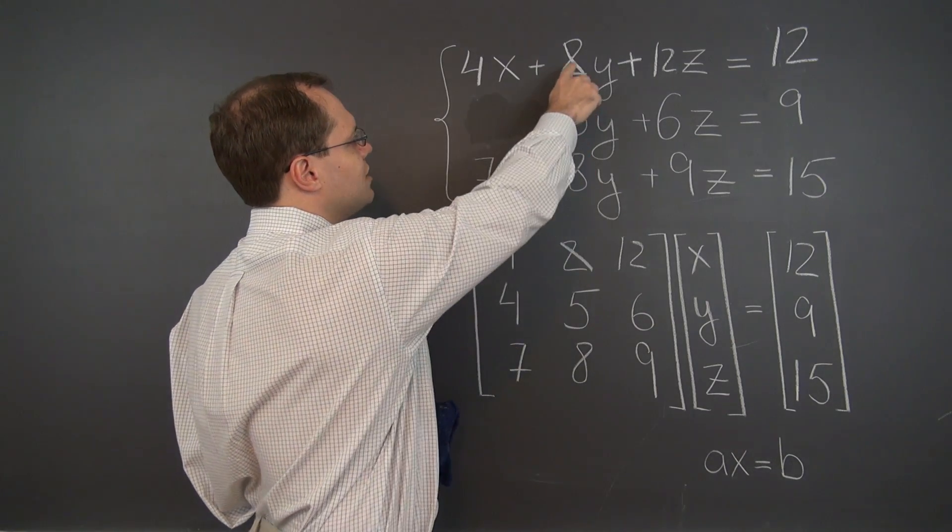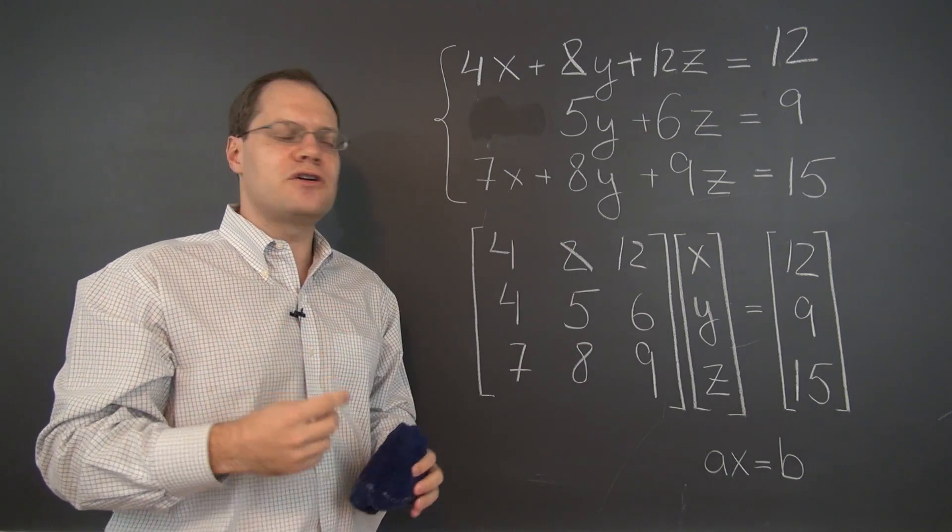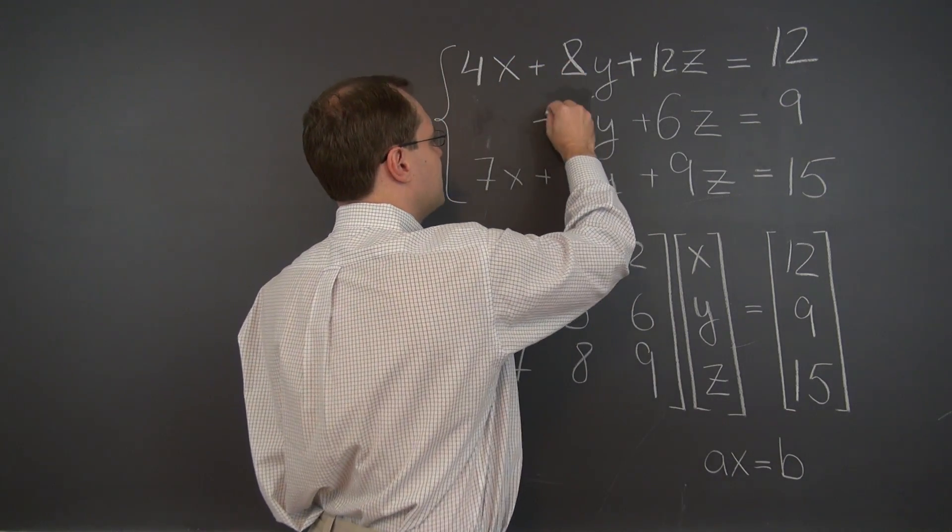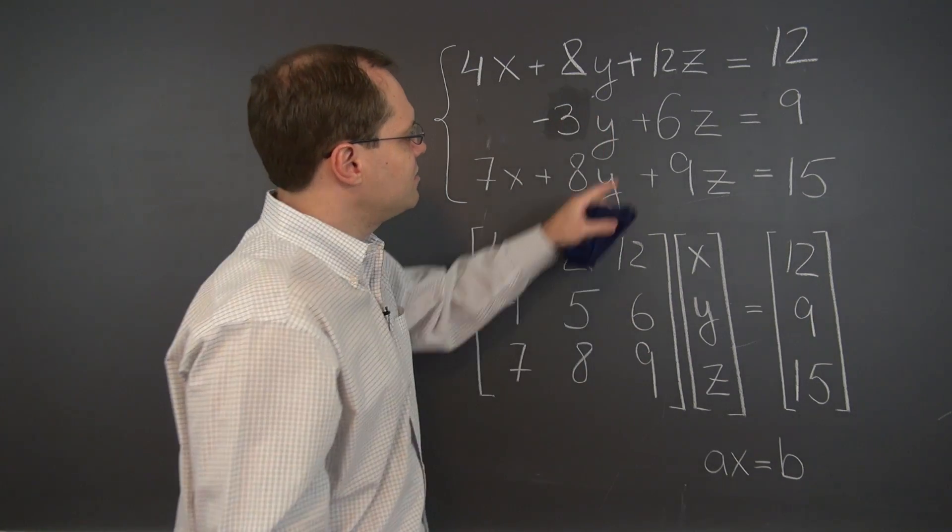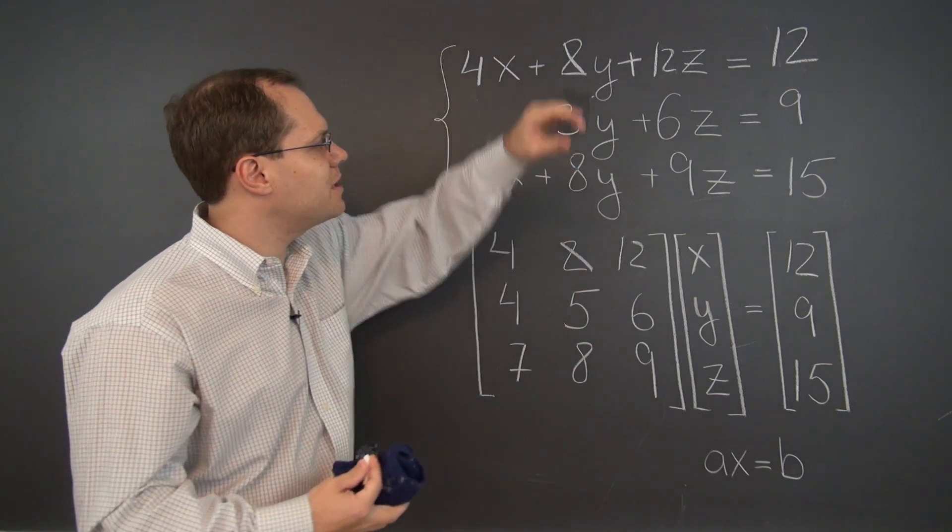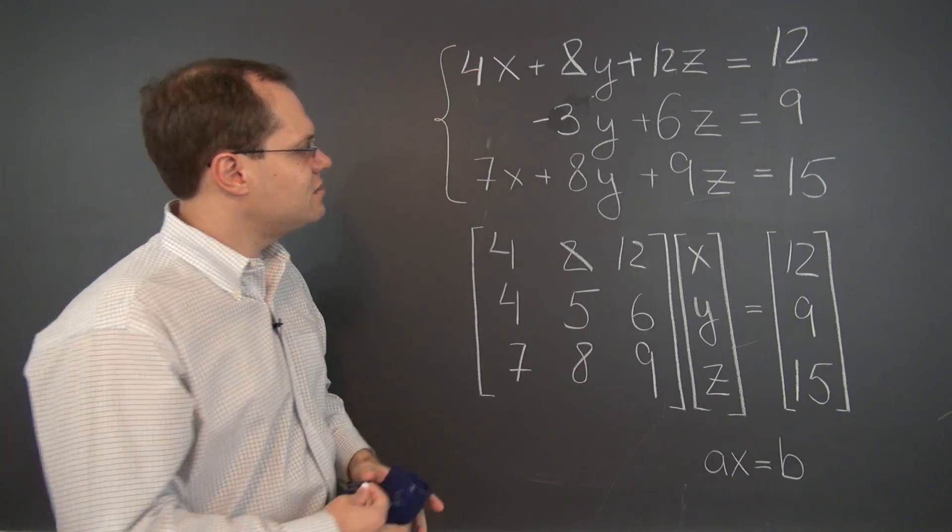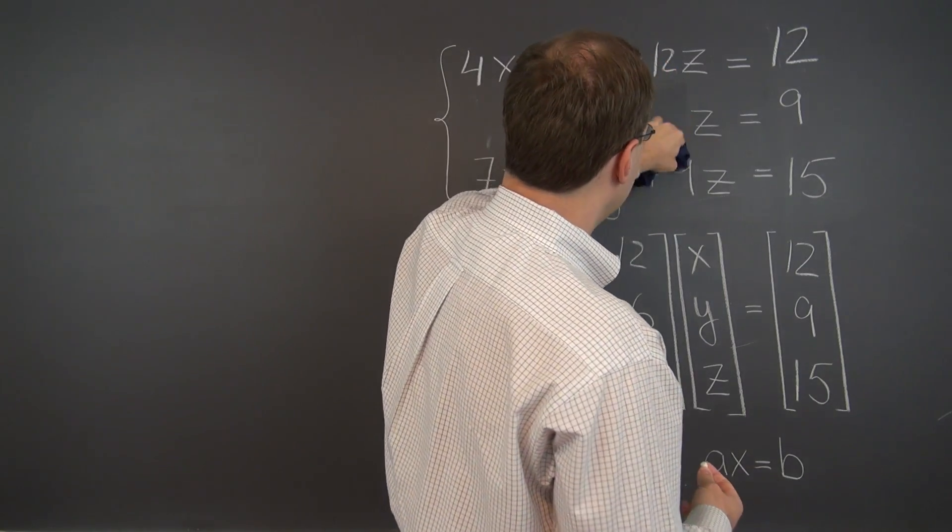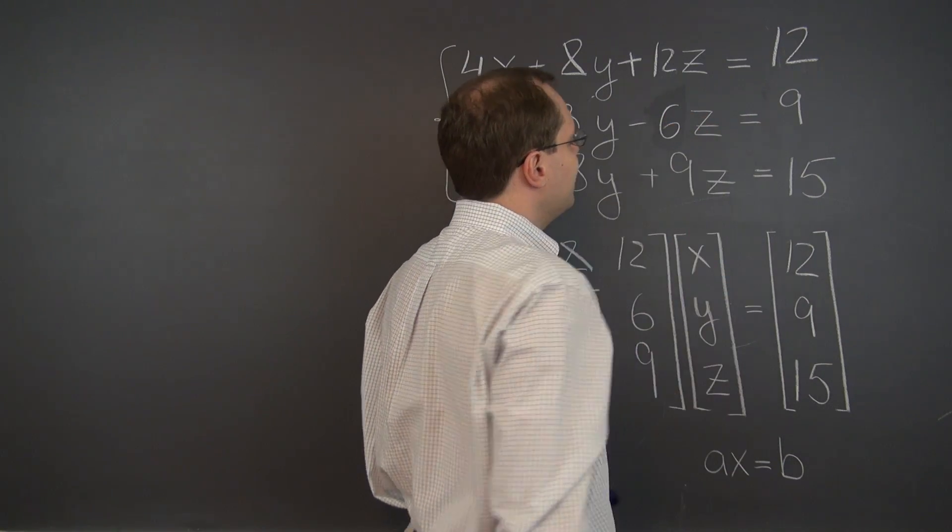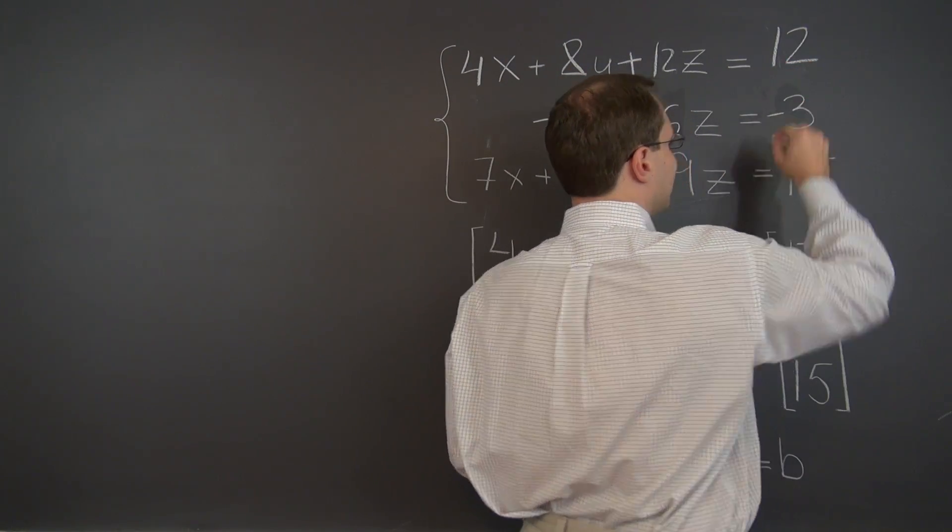In the second position, we will have 5 minus 8 because we're subtracting first from second. So now the second coefficient will be minus 3. This coefficient will be minus 6 because it's 6 minus 12. Just keep in mind that we're subtracting first equation from second. So minus 6 in this position. And minus 3 on the right-hand side.